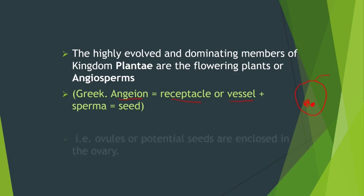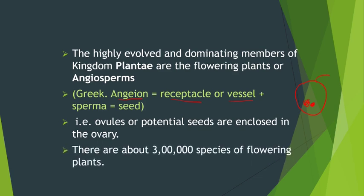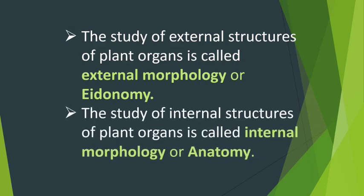Thus, in Angiospermic plants, the ovules which are the potential seeds will be enclosed in the ovary, which will later form the fruit. There are about 3 lakh species of flowering plants. Now, the study of external structures of plant organs is called as external morphology or eidonomy, whereas the study of internal structures of plant organs is called as internal morphology or anatomy. So eidonomy is the opposite of anatomy.